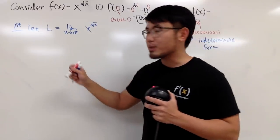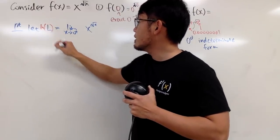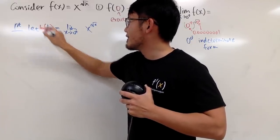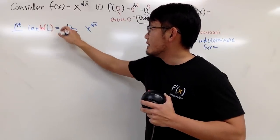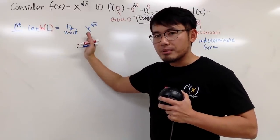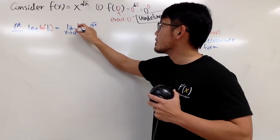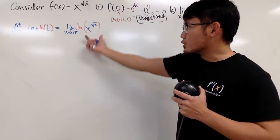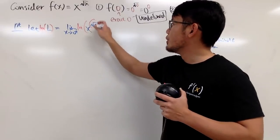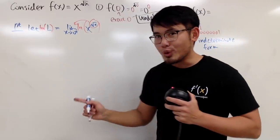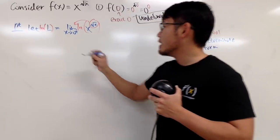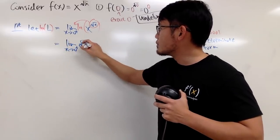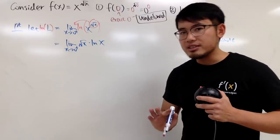That's usually how we deal with the 0 to the 0 indeterminate form. From here, I take the natural log on both sides. On the right-hand side, the natural log of the limit equals the limit of the natural log, because natural log is a continuous function. Then we bring the power to the front, so we no longer have a function to a function power. This gives us the limit as x approaching 0 plus of square root of x times natural log of x.